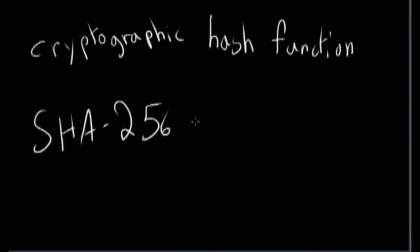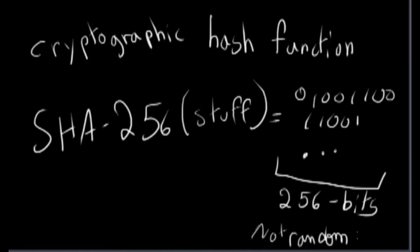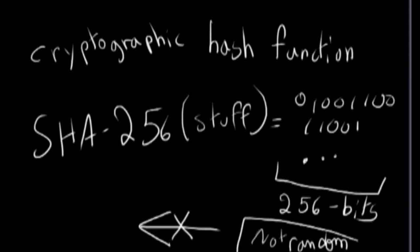A cryptographic hash function like SHA-256 is an algorithm that takes an input and gives an output of fixed length. That output looks random but is not random as it gives the same output for the same input.